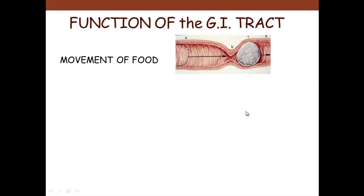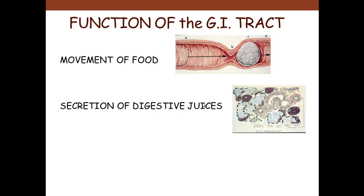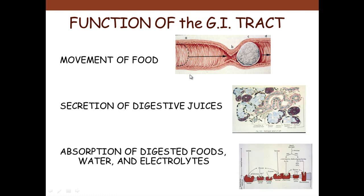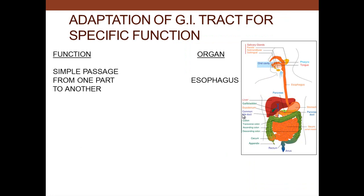The GI tract does three basic things. First, it moves food from one area to another — starting with the mouth and ending at the anal end. Second, it produces secretions: digestive juices, mucus, and enzymes for digestion to occur, so you look for secretory glands and smooth muscle important in movement of food. Third, there is absorption of food, electrolytes, and water, so you expect to see a high amplified surface area for absorption in the intestinal absorptive cells.